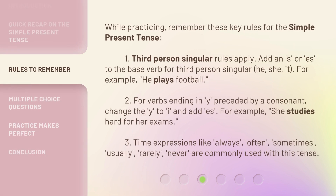While practicing, remember these key rules for the simple present tense. Rule 1: Third person singular rules apply — add an s or es to the base verb for third person singular (he, she, it). For example, he plays football. Rule 2: For verbs ending in y preceded by a consonant, change the y to i and add es. For example, she studies hard for her exams.